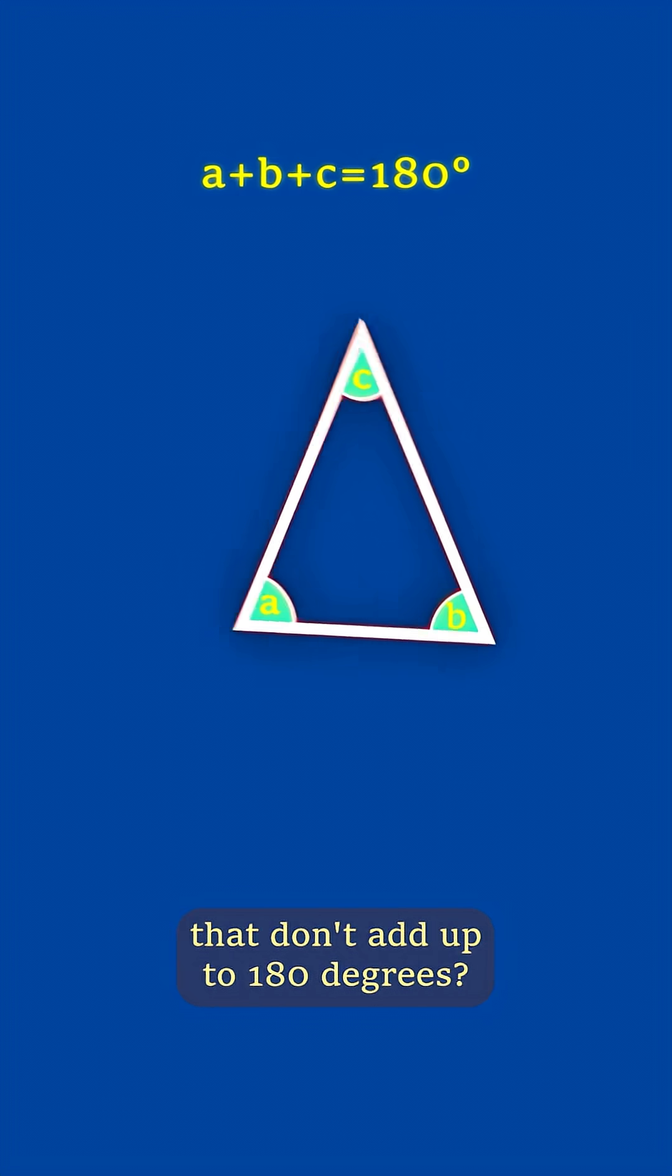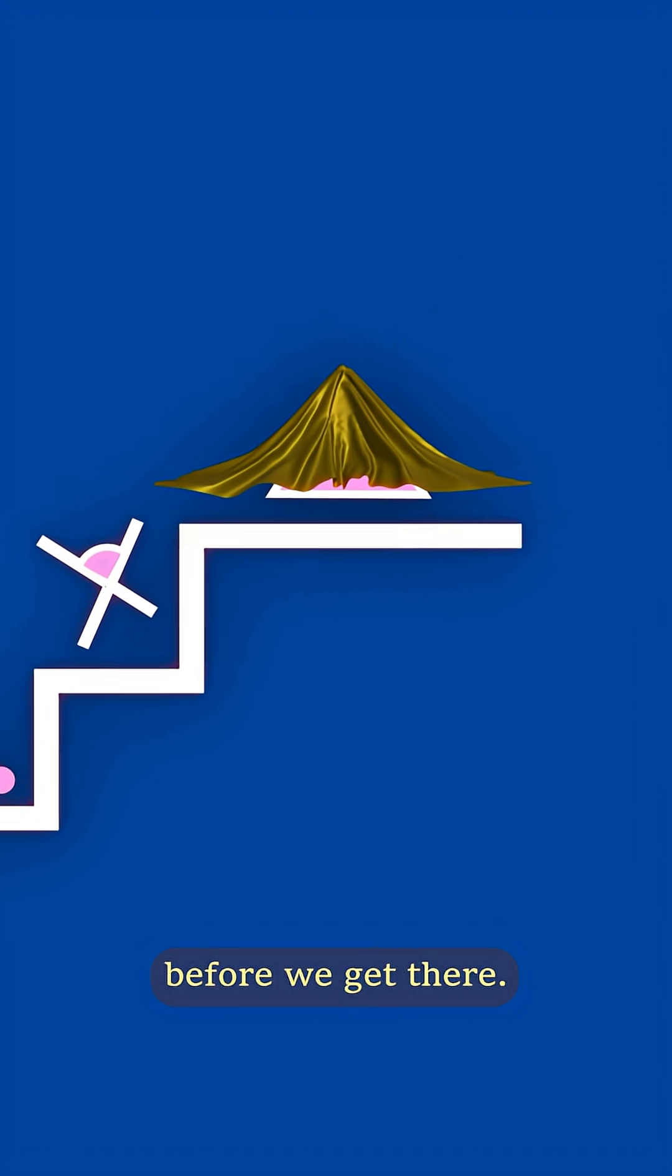Can you make a triangle with angles that don't add up to 180 degrees? Well, we need to introduce these three concepts before we get there.